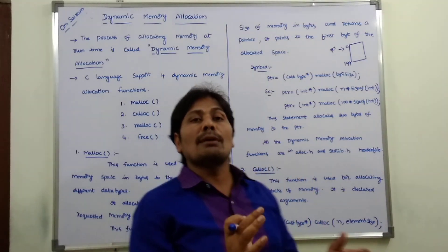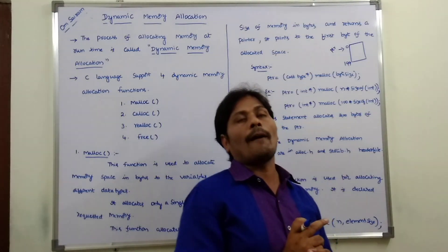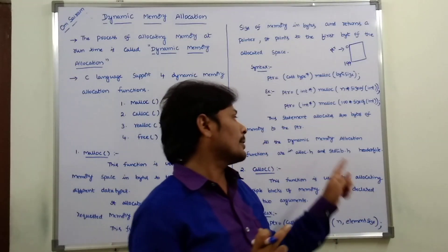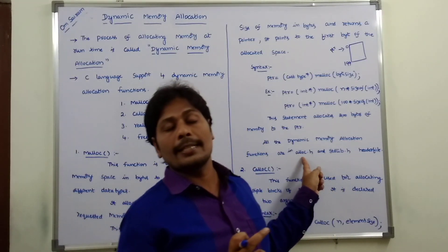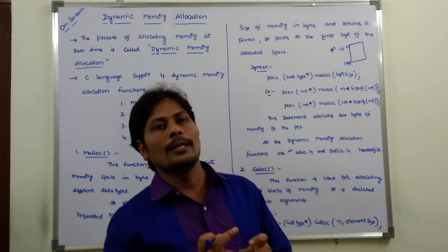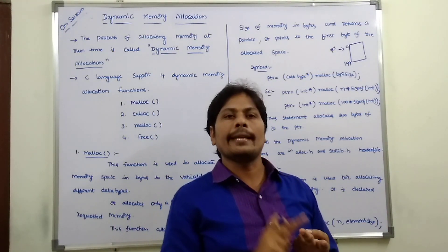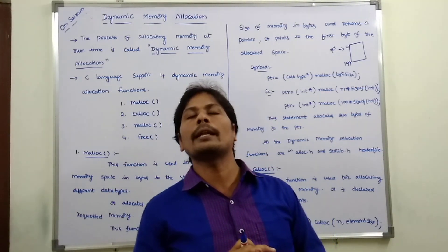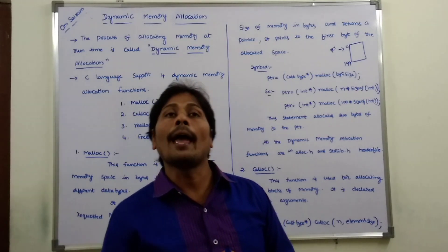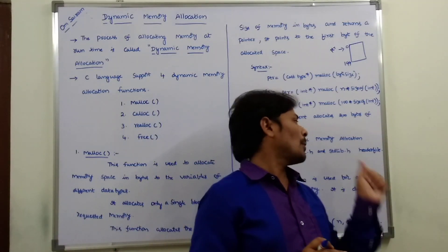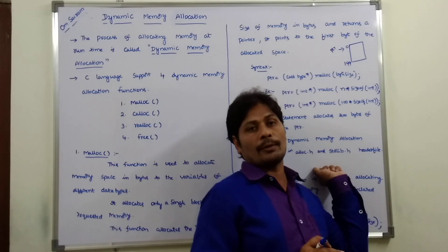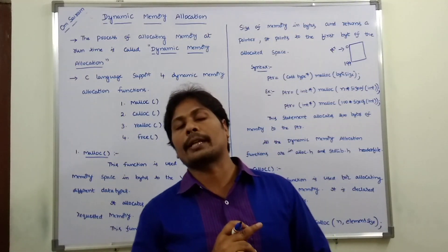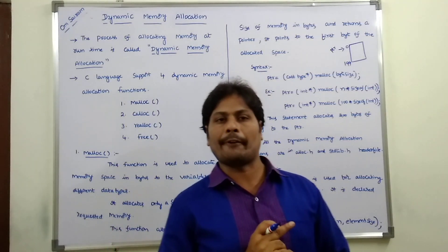All four dynamic memory allocation functions — malloc, calloc, realloc, and free — are available in the header file alloc.h. If that is not available in a multiple choice question, they are also in stdlib.h, the standard library header file.